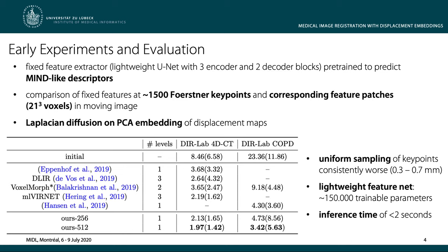We compared our method to several other deep learning methods on the DIRLAB 4DCT and COPD gene datasets, showing an improved target registration error in a single forward pass through our architecture at inference times of under 2 seconds. Using a uniform sampling of grid points instead of distinctive keypoints extracted with the FORSTNER operator performed consistently worse in all our experiments, which further validates our concept of irregular keypoint registration.